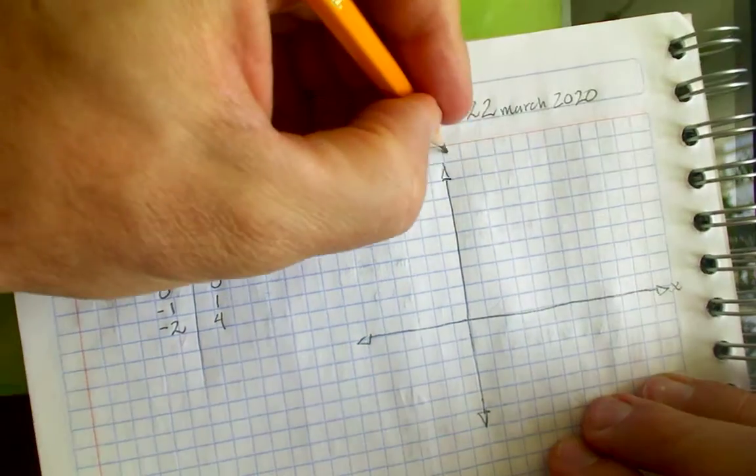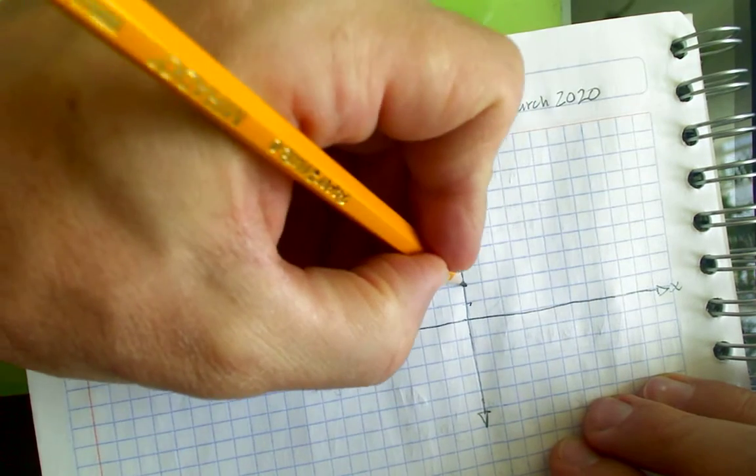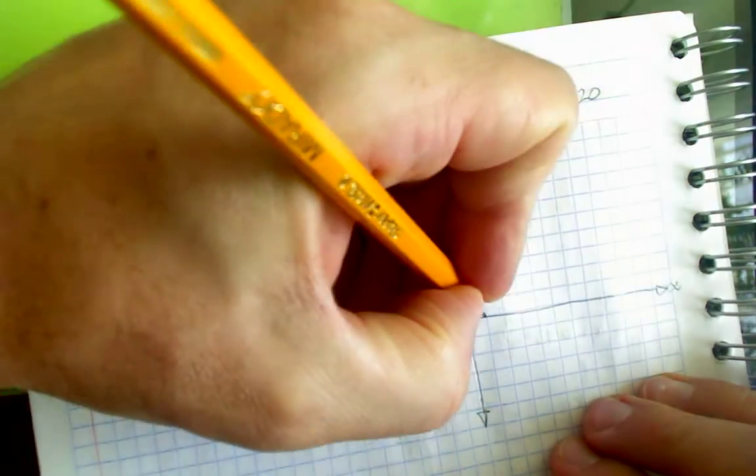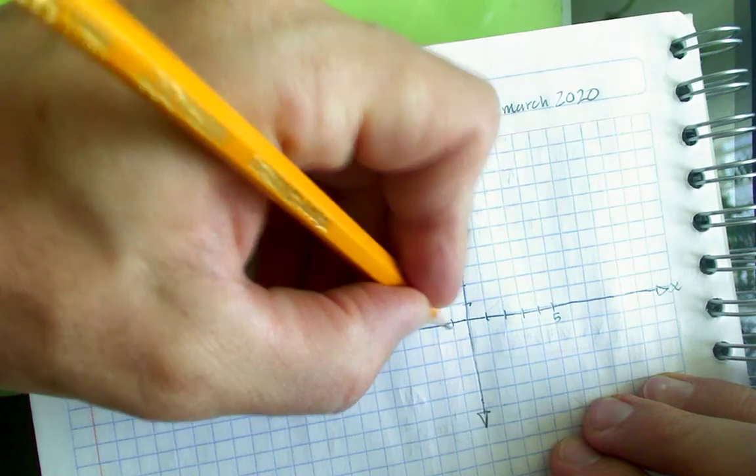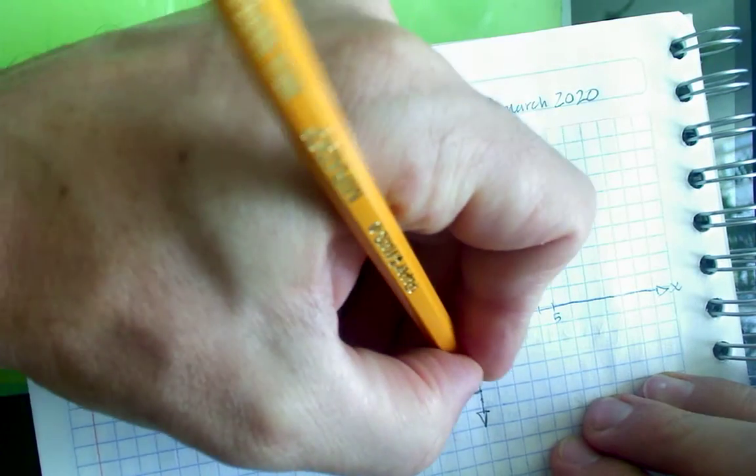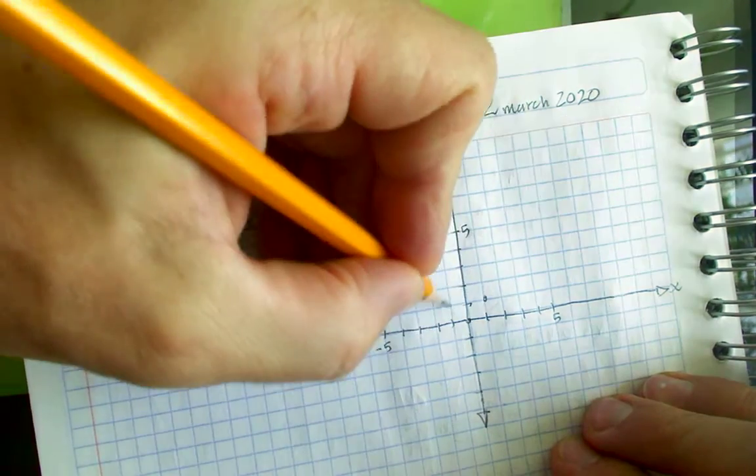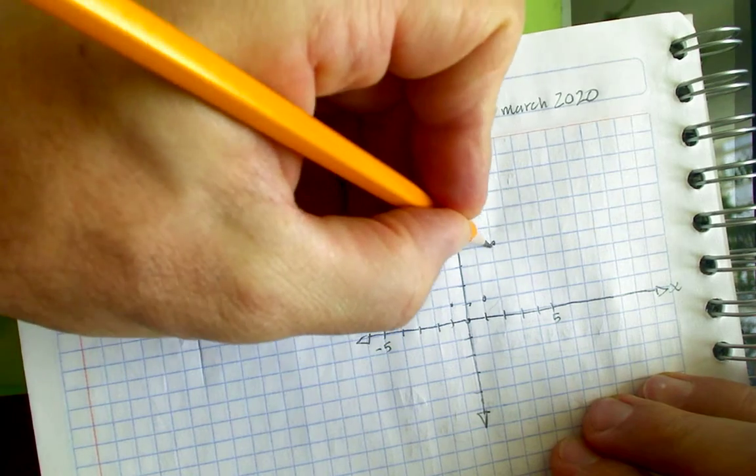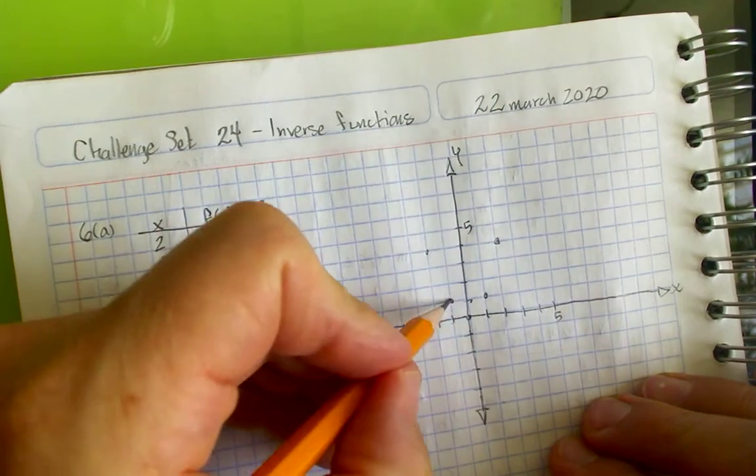Then I'm going to make a graph of this function, labeling my axes and scaling one, two, three, four, five. This is a very familiar graph. It's just the parent function really of the quadratic function family.